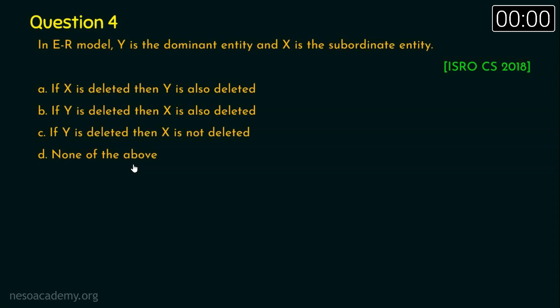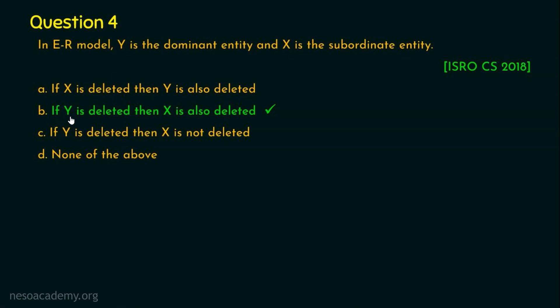Stop. The right answer is option B — if Y is deleted then X is also deleted. Y is the dominant entity and X is the subordinate entity, so the existence of X depends on the existence of Y. If Y is deleted, then X is also deleted because X depends on Y's existence.